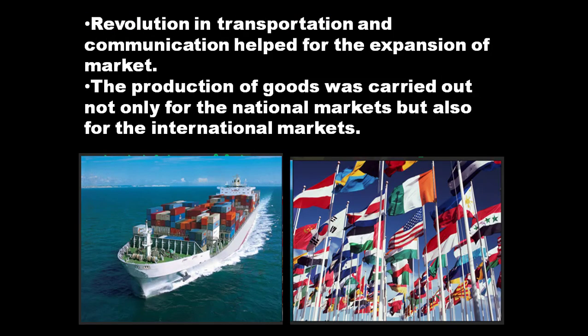As a result of these geographical discoveries, the Industrial Revolution took place in England. Geographical discoveries and the Industrial Revolution helped in large-scale production of goods, not only for local markets but also for other countries. Standardized goods were produced with the help of machines. Revolution in transportation and communication helped for the expansion of markets. Production was carried out not only for national markets but also for international markets, and geographical discoveries and the Industrial Revolution played a very significant role in the development of the international trade stage.